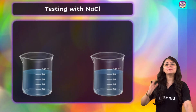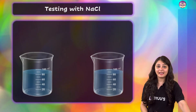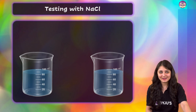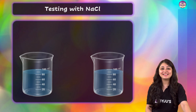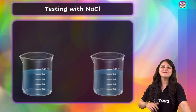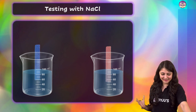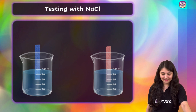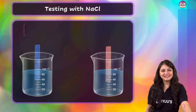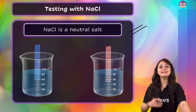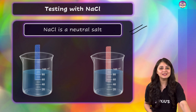Let's take two beakers filled with water and add sodium chloride salt to it. Now let's check the nature of this salt using blue and red litmus paper. Let's see what happens. Nothing is happening — no change in color. That means NaCl, sodium chloride, is a neutral salt.